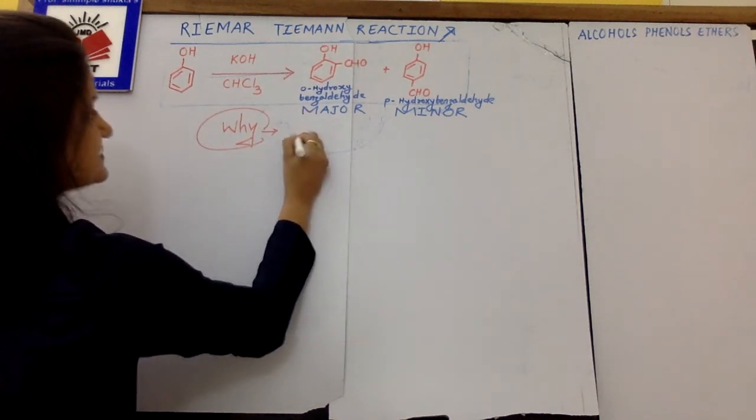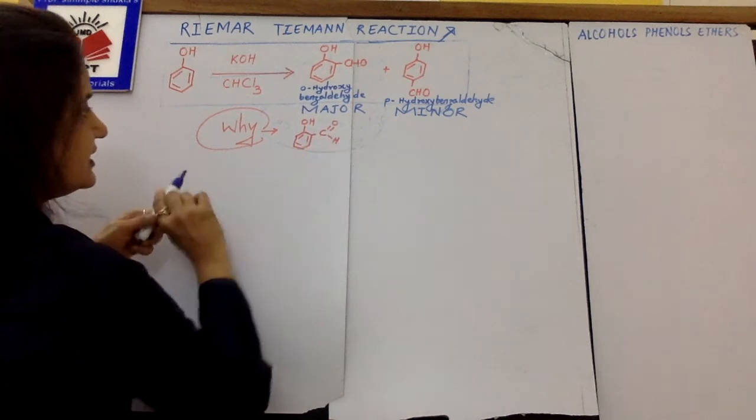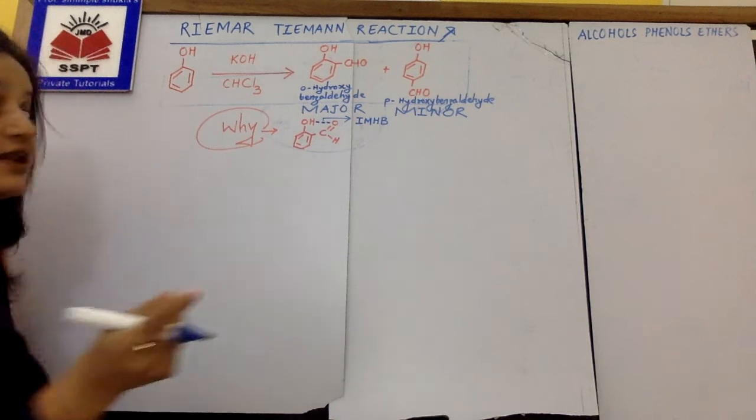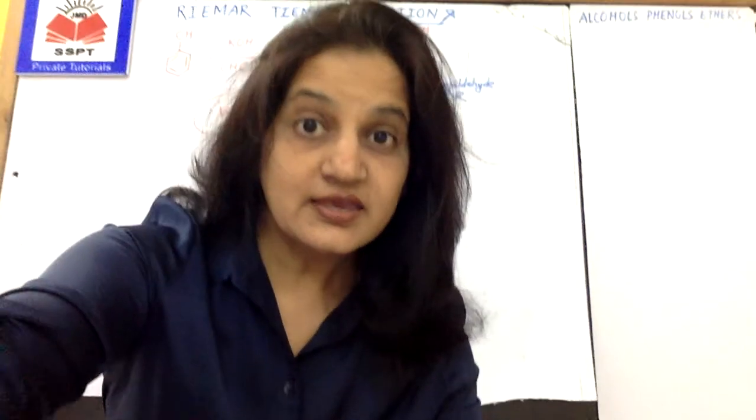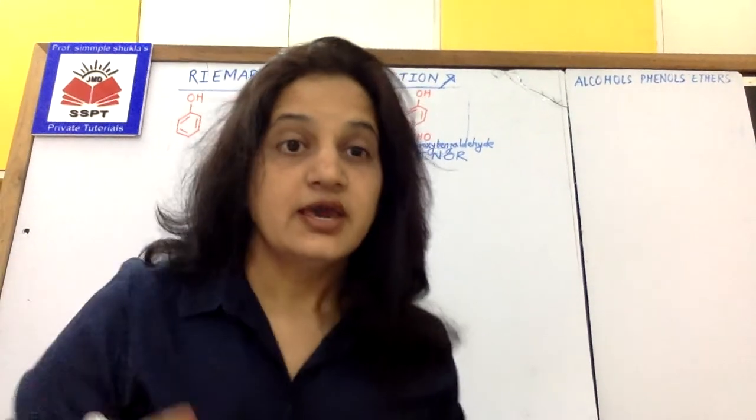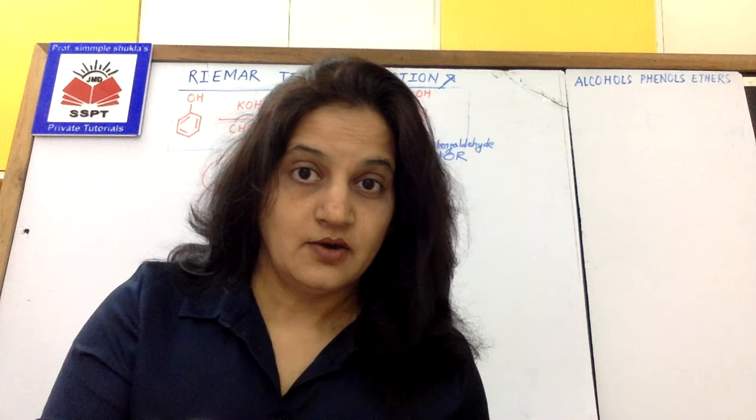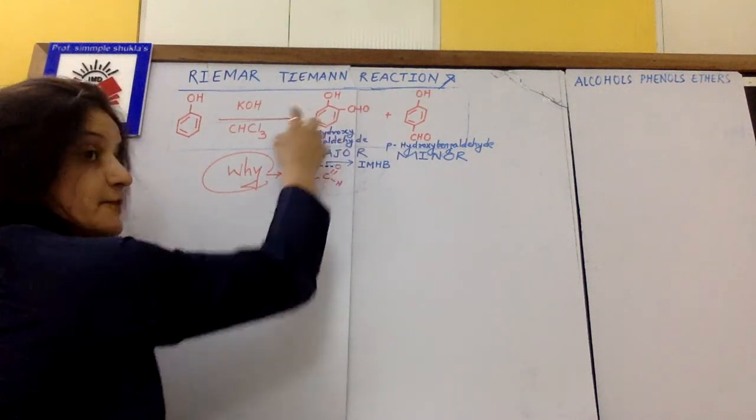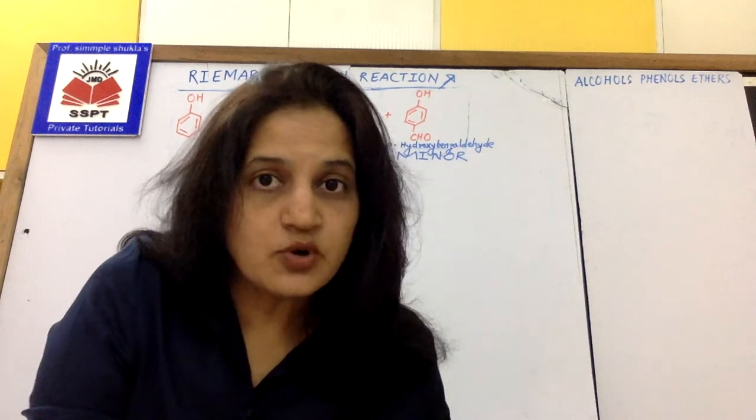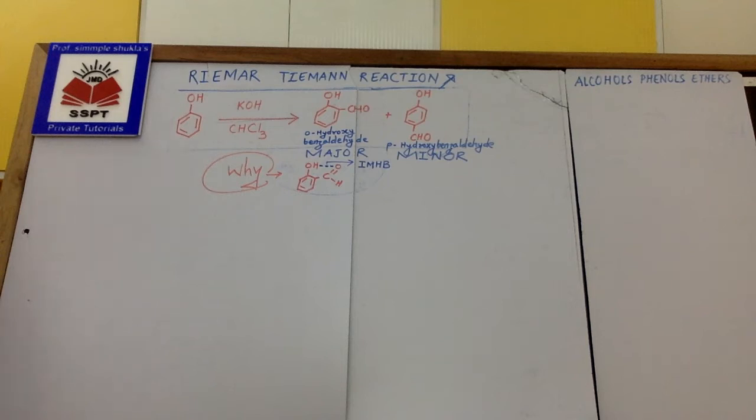Because in this molecule, orthohydroxy benzaldehyde, there is an intramolecular hydrogen bond. Not only this children, ortho has two positions on benzene. Two positions means collision frequency is more on ortho. So obviously the product which is ortho is major because along with that there is also intramolecular hydrogen bonding to give it extra stability.